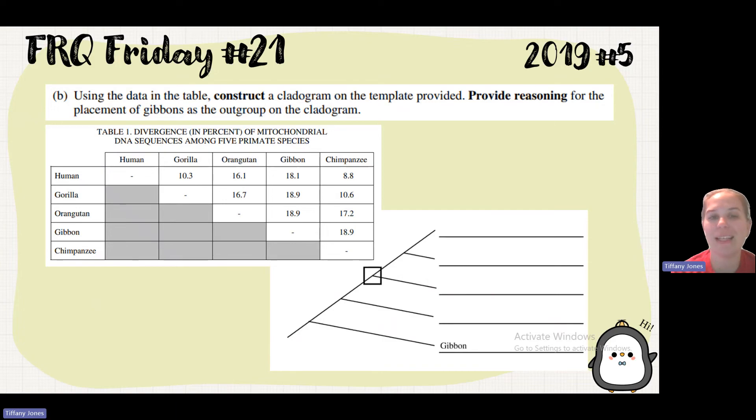Part B says using data in the table, construct a cladogram on the template provided. Provide reasoning for the placement of the gibbons as the outgroup. So we already know the human and the chimpanzee had the lowest numbers. We put those together on the cladogram.